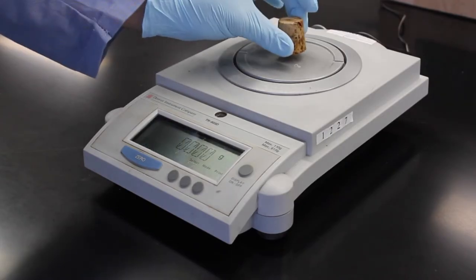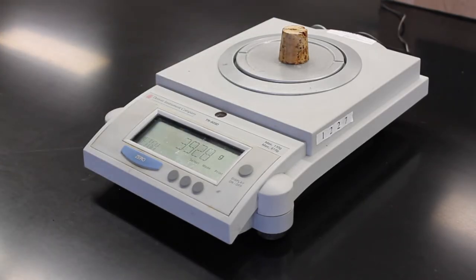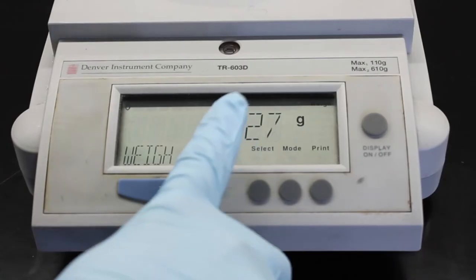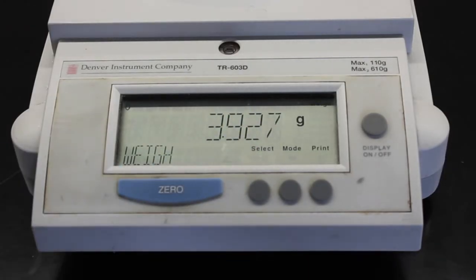Place your object onto the balance, and make sure that you are not leaning on the table. This can throw off the leveling of the balance and cause your readings to be off. Once a constant mass is displayed, record the mass of your object.